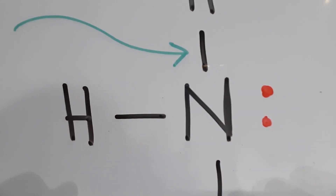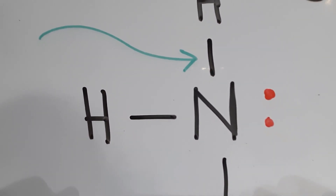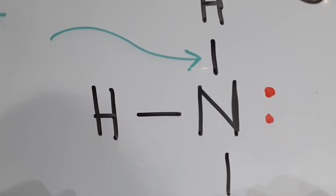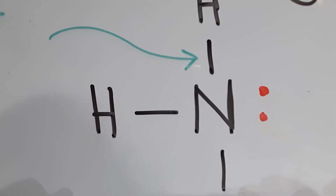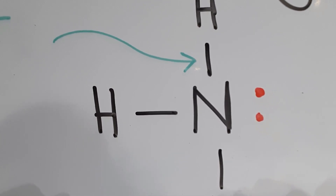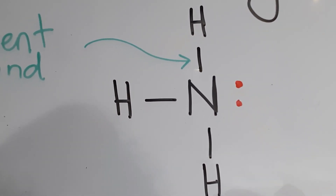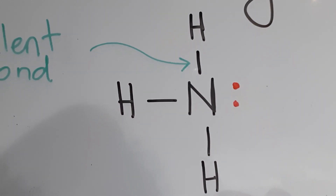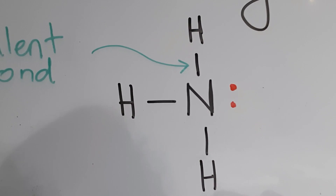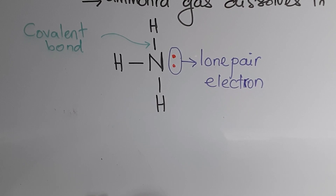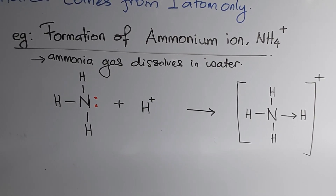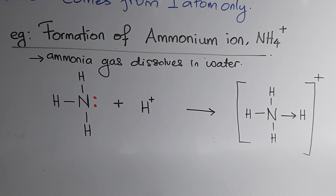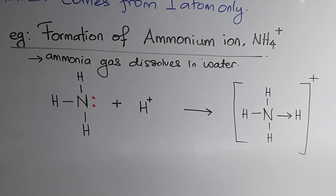Looking closely at the nitrogen atom — nitrogen's electron arrangement is 2, 5, so it has five valence electrons. Out of the five valence electrons, three electrons have contributed to sharing with three atoms of hydrogen. In return, the nitrogen atom has two valence electrons which are not involved in the covalent bond, and these electrons are known as a lone pair.